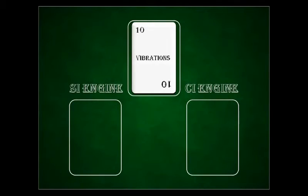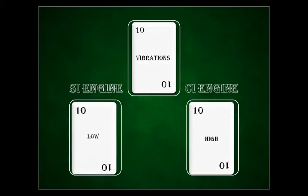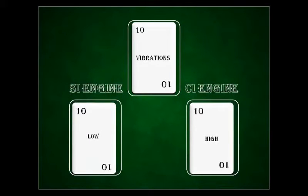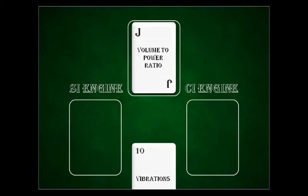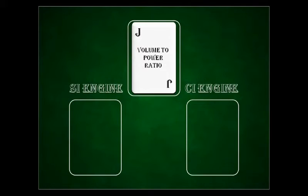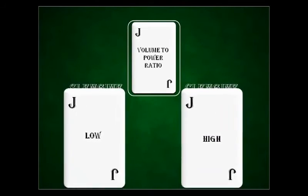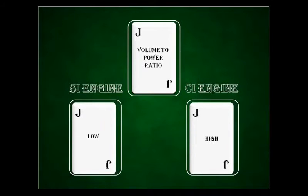Next is vibrations. Vibrations produced by CI engines are very high compared to SI engines, because of the high compression ratio used. Next is volume-to-power ratio. The volume-to-power ratio of SI engines is low compared to CI engines. This is one reason why CI engines are costlier — the volume of the combustion chamber of a diesel engine that produces the same power as a petrol engine is large, consuming more material and adding to the overall cost.